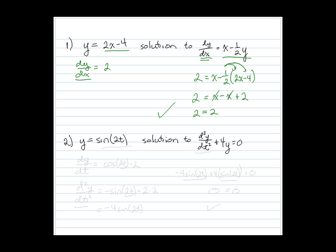The second one is very similar. Notice now we need the second derivative because we have a second order differential equation. So we first find dy/dt. This will be a chain rule. The derivative of sine is cosine of 2t. Now we take the derivative of the inside, so times 2.